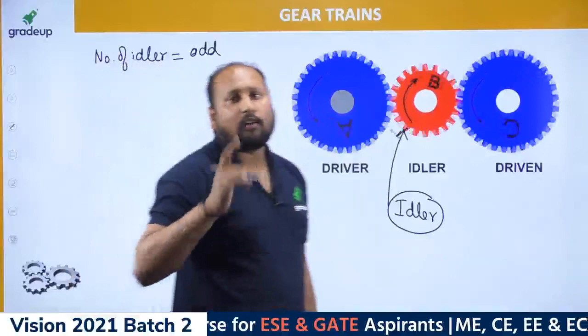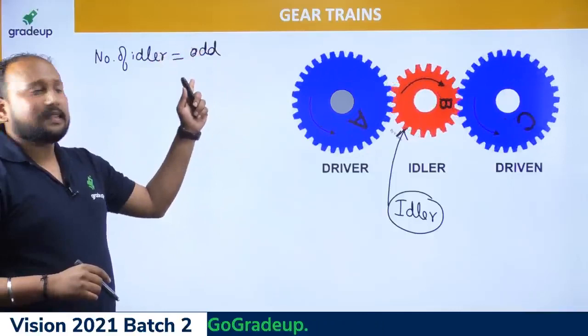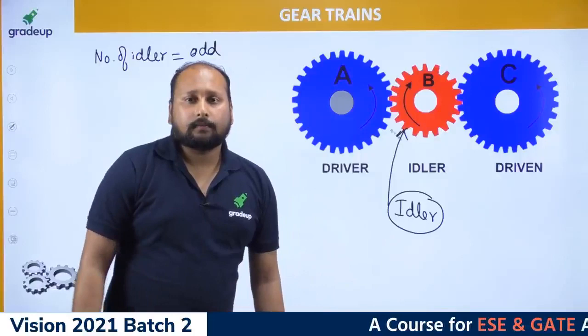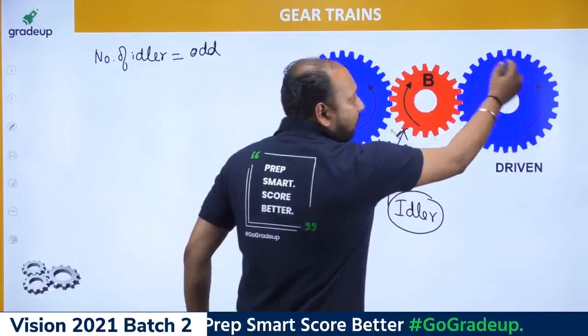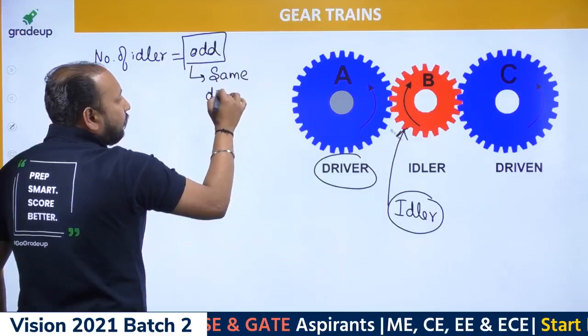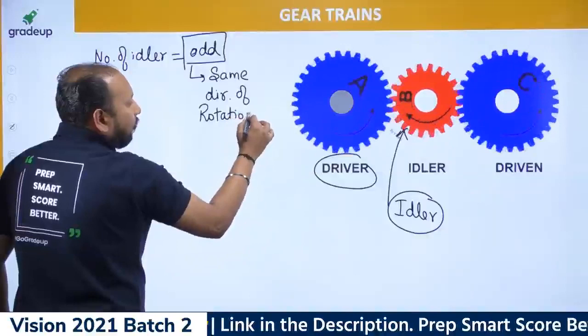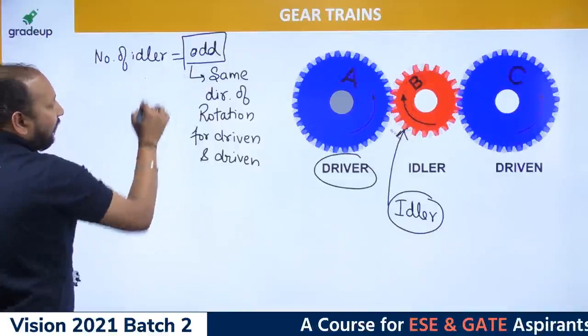If the number of idlers is odd, the direction of rotation of the driver and driven will be the same. If the number of idlers is even, the direction of rotation will be opposite. For instance, with one idler (odd), the driver and driven both rotate in the same direction — anti-clockwise in this case.